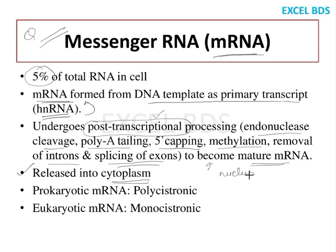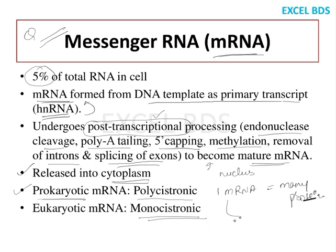The mRNA present in prokaryotic cells is polycistronic, meaning one mRNA can lead to many protein syntheses. In eukaryotic cells such as humans, it is monocistronic — one mRNA codes for one protein, or one gene codes for one protein. In polycistronic mRNA, one gene codes for many proteins.